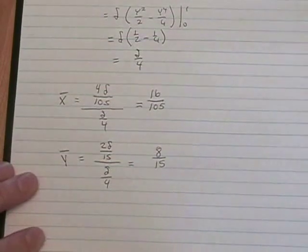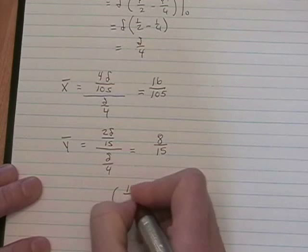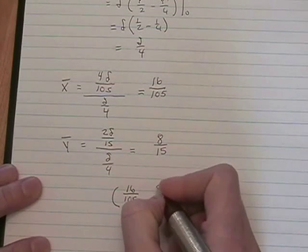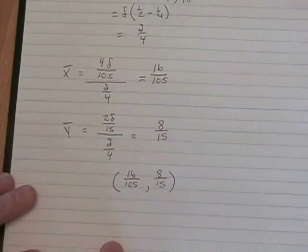So our center of mass is located at the point 16 over 105, comma, 8 over 15. Wooh.